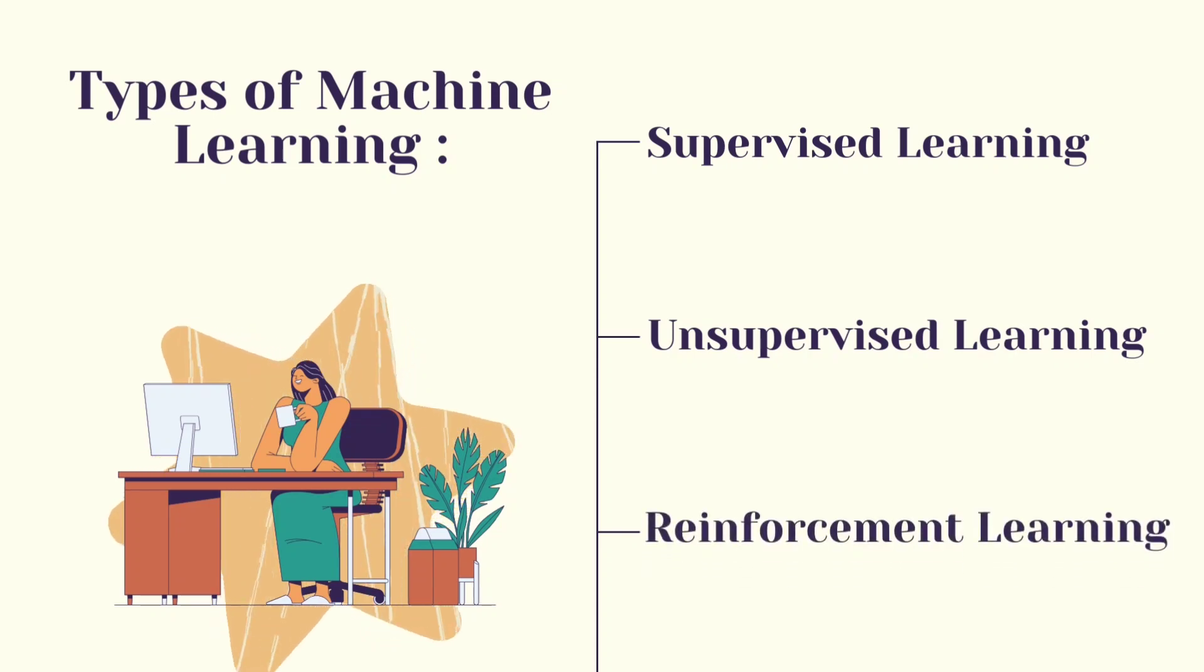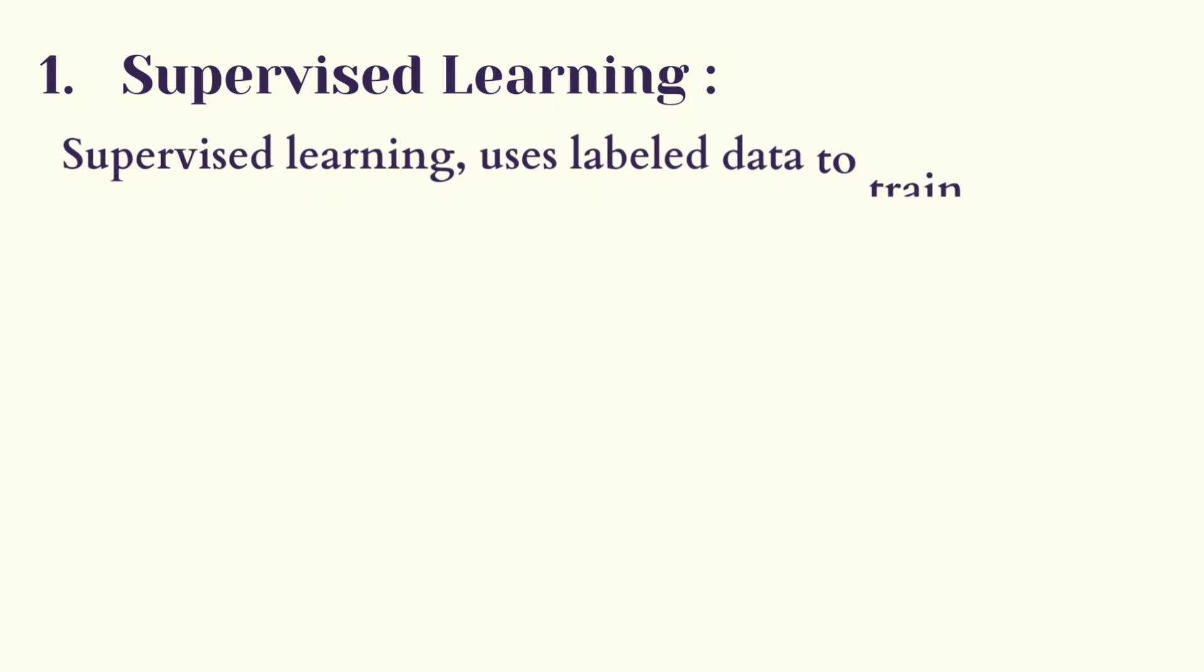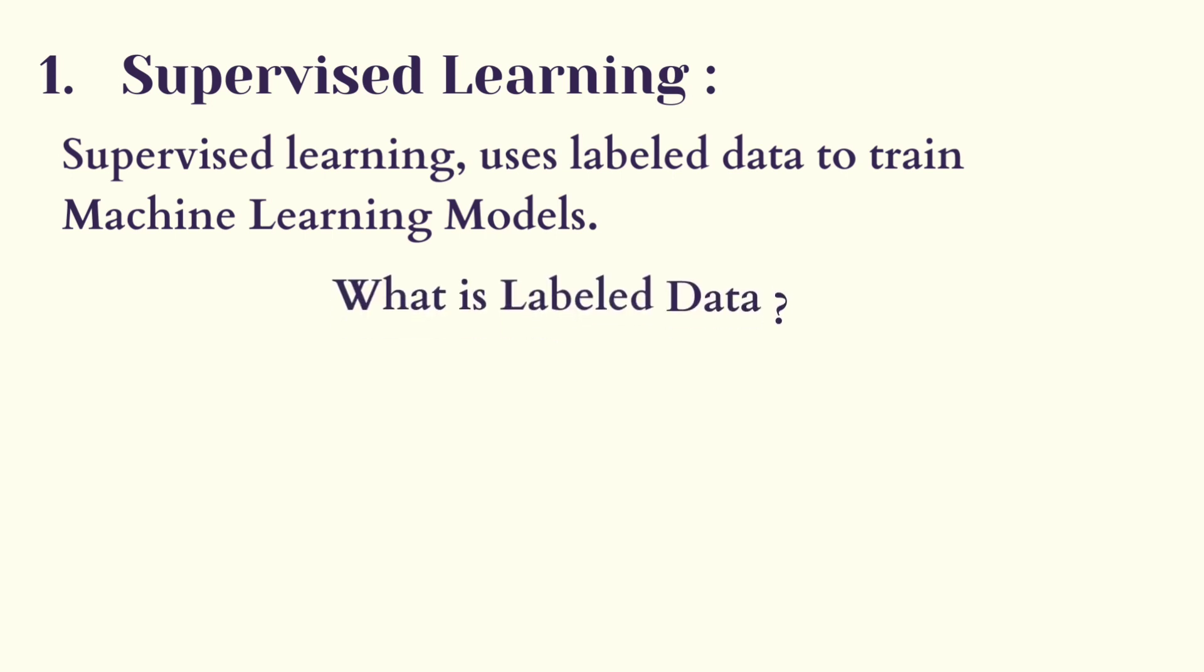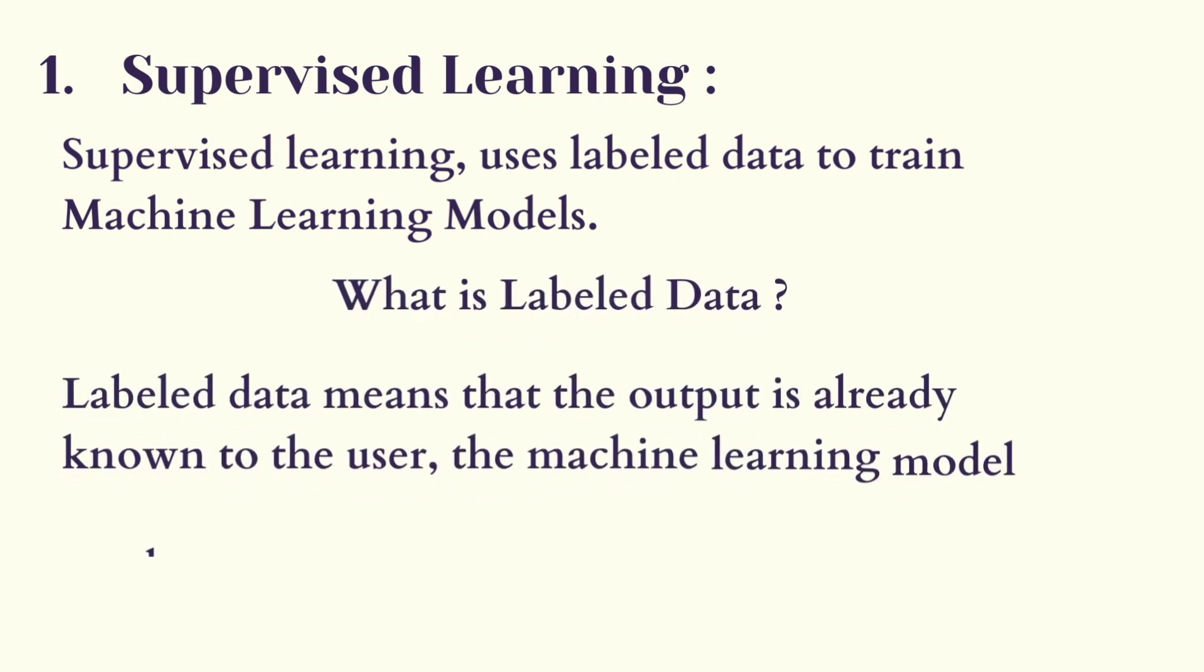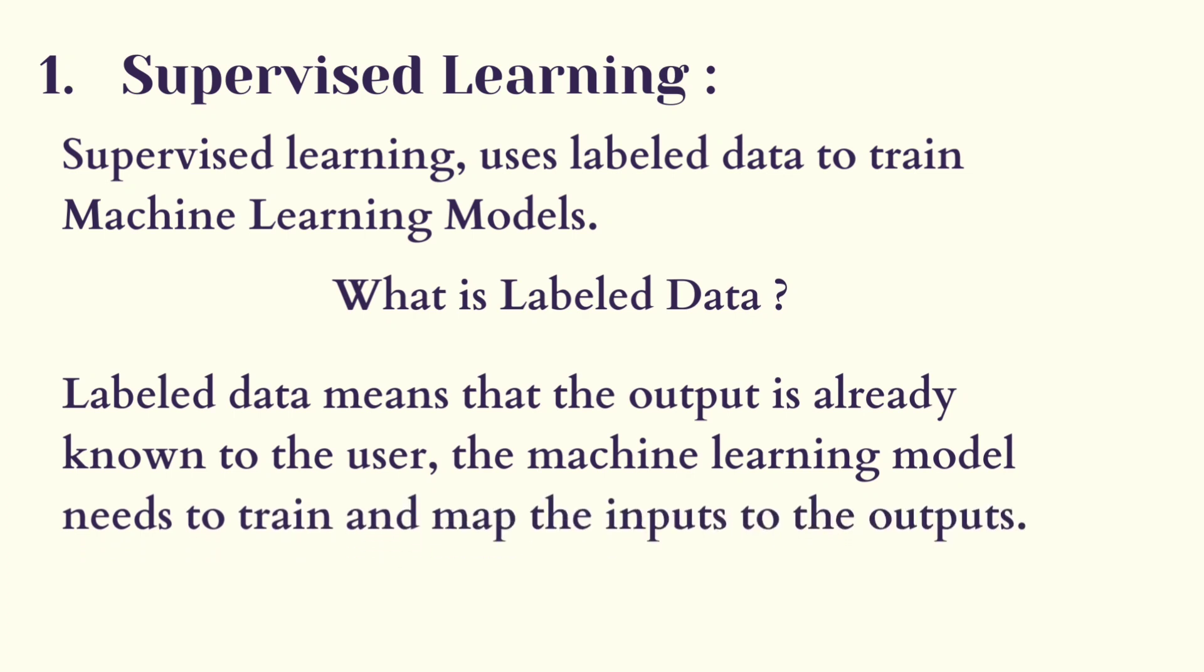Now let's discuss each of them in detail and understand when to use these models. Supervised learning uses labeled data to train machine learning models. So what is labeled data? Labeled data means that the output is already known to the user. The machine learning model needs to train and map the inputs to the outputs.